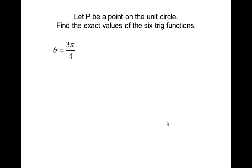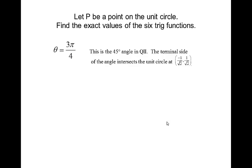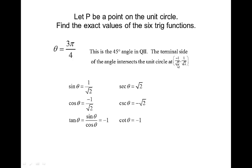Let P be a point on the unit circle. Find the exact values of the six trigonometric functions for three pi over four. The terminal side of the angle intersects the unit circle at negative one over square root of two, one over square root of two — the 45-degree angle in quadrant two. So cosine is negative one over square root of two and sine is one over square root of two. Then here are your reciprocals. Tangent is sine divided by cosine, which gives negative one, and cotangent is also negative one. In quadrant two with three pi over four, cosine and tangent are both negative and sine is positive.